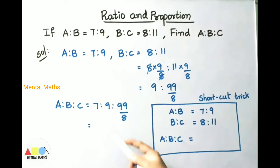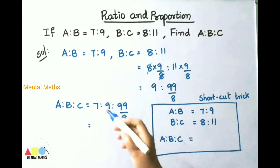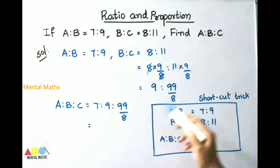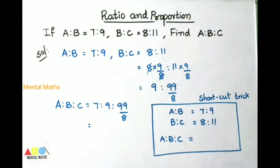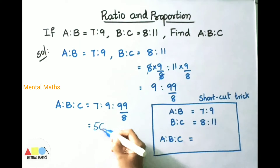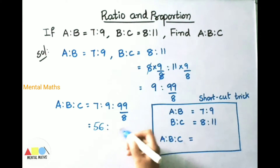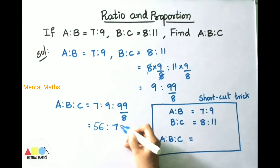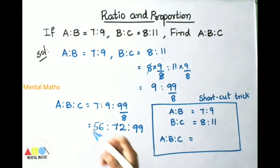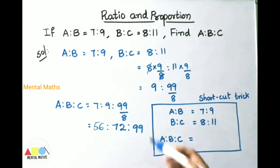Therefore A is to B is to C is 7 is to 9 is to 99 by 8. To remove this 8, we are going to multiply all three terms by 8. So 7 eights are 56, 9 eights are 72, and the third term is 99. So A is to B is to C is 56 is to 72 is to 99.